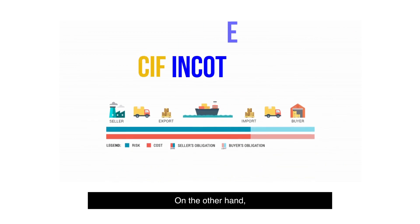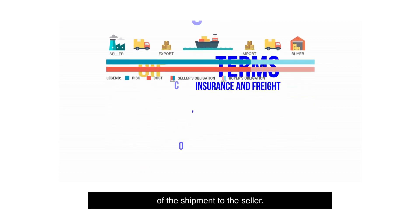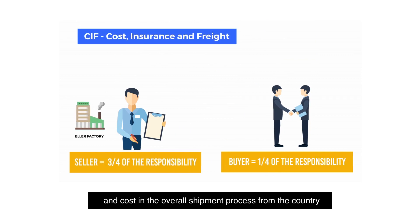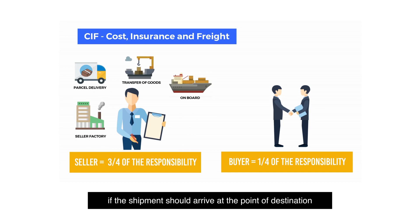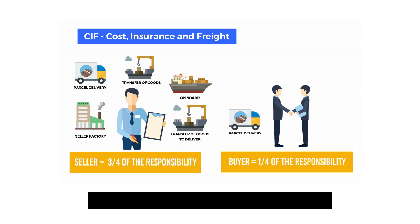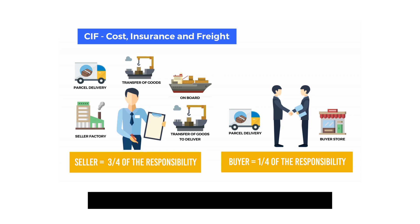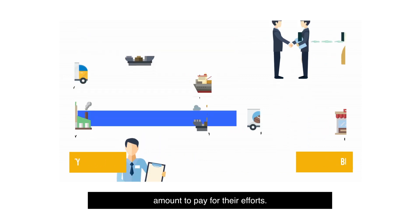CIF, or Cost, Insurance, and Freight, is a type of agreement that places the burden of the shipment on the seller. The seller practically covers all the needed things and costs in the overall shipment process, from the country of origin to the receiving company, including the insurance of the goods. Both the seller and the buyer should agree if the shipment should arrive at the point of destination or go straight to the final address of delivery. If the buyer wants to pick it up at the destination point, he or she should shoulder any additional costs upon arrival. This type of agreement is much more expensive since most suppliers add a premium amount to pay for their efforts.